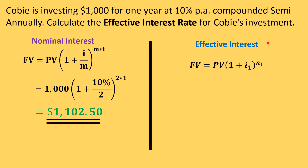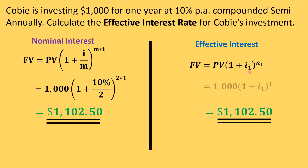We know this future value will be the same if we use an effective interest rate, because we're going to include the compounding frequency in that effective interest rate. The effective interest rate equation is FV = PV × (1 + i₁)^n₁. This also equals one thousand one hundred and two dollars fifty cents, because the compounding is included in i₁.